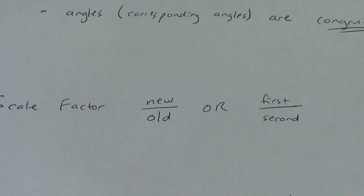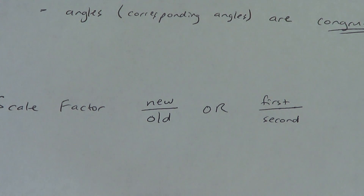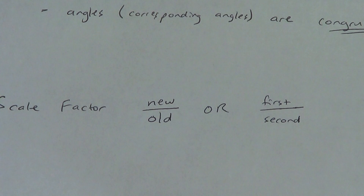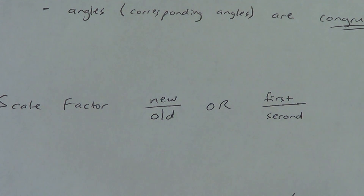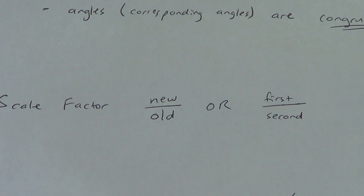A couple of things about scale factor: if the scale factor is bigger than one, then that means your shape should be getting bigger — it's what we call an enlargement. If your scale factor is smaller than one, then your shape is getting smaller — it's what we call a reduction. So scale factor bigger than one means enlargement, scale factor smaller than one means reduction.